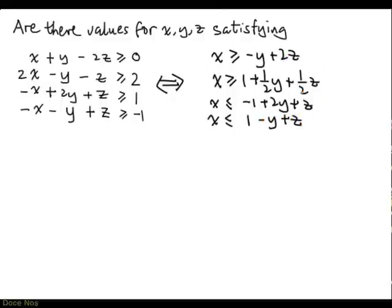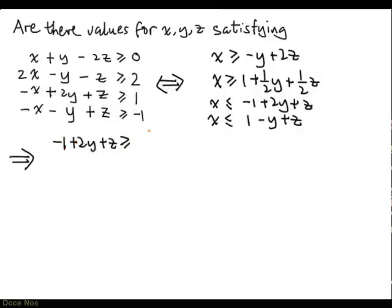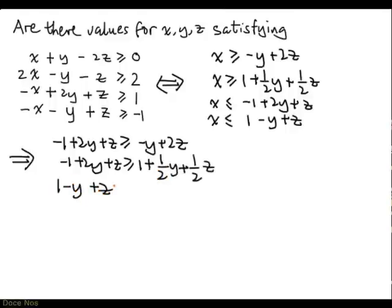So now if we look at this system, we have lower bounds for x — in fact two of them: x has to be at least minus y plus 2z, and x has to be at least 1 plus one-half y plus one-half z. And x has to be at most minus 1 plus 2y plus z, and at most 1 minus y plus z. So what this is saying is, if I look at any upper bound for x, it has to be at least any one of the lower bounds. So if x, y, and z satisfy these inequalities, every upper bound must be at least every lower bound.